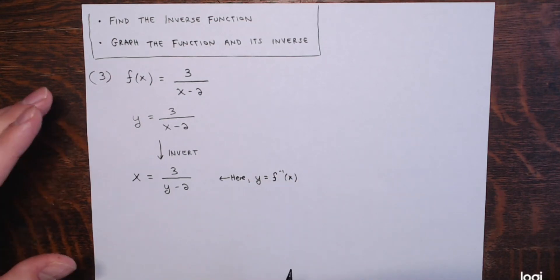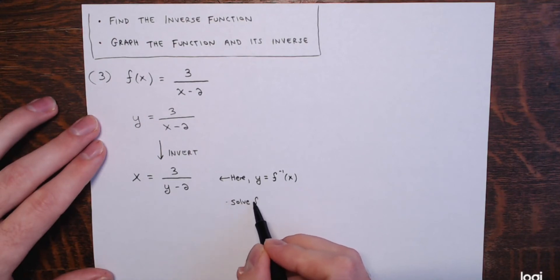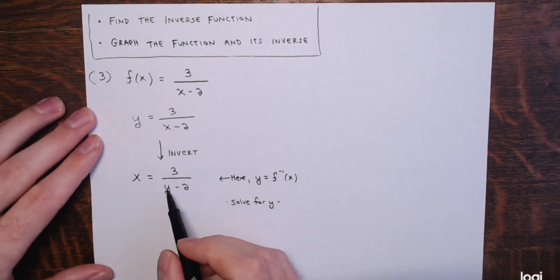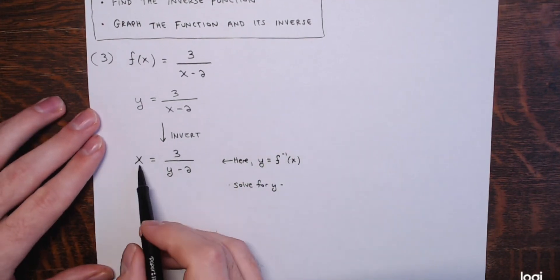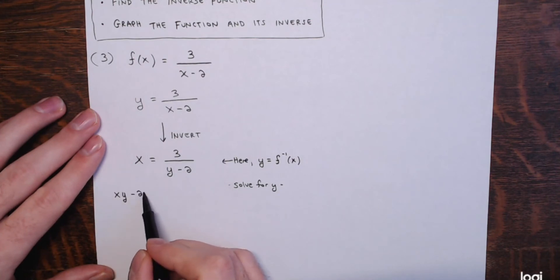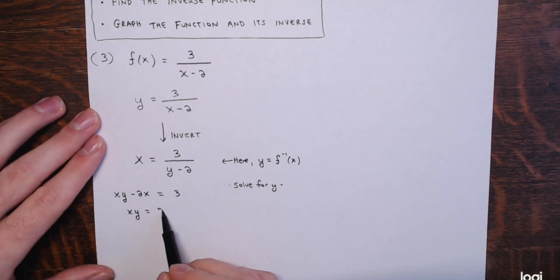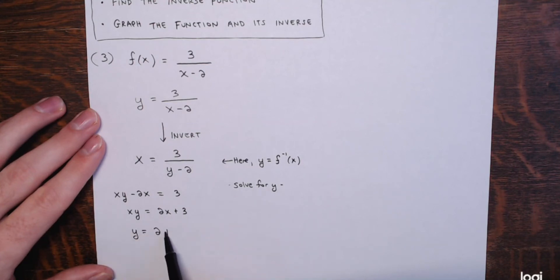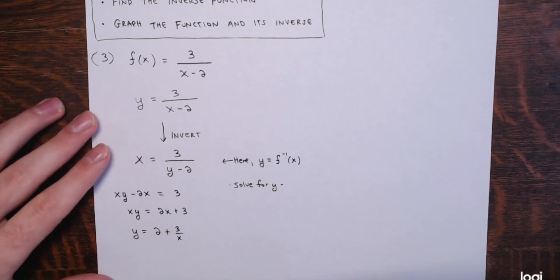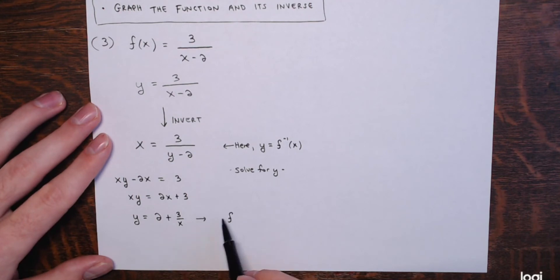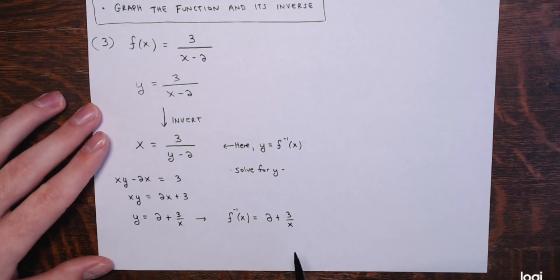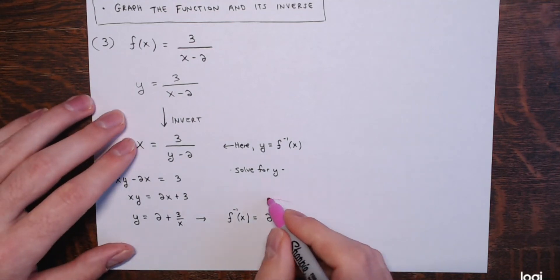Then solve for y. Multiply both sides by (y − 2) to clear the denominator. Distributing x gives xy − 2x = 3. Get all terms without y to the other side: xy = 2x + 3. Divide everything by x to get y alone: y = 2 + 3/x, or 3/x + 2. That's your inverse — f inverse of x equals 2 + 3/x.